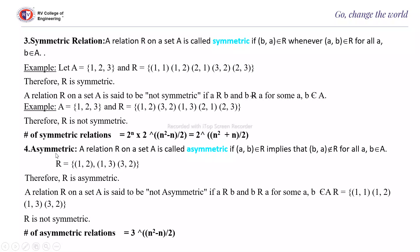Next is asymmetric relation. A relation R on set A is called asymmetric if (a,b) ∈ R implies (b,a) ∉ R for all a,b ∈ A. That means either (a,b) or (b,a) belongs to R, but not both. Example: R = {(1,2),(1,3),(3,2)}. R is asymmetric because when (1,2) is there, (2,1) is not; when (1,3) is there, (3,1) is not; when (3,2) is there, (2,3) is not. Therefore it is asymmetric.